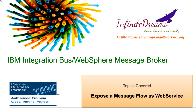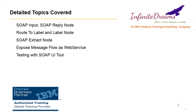Hello friends, in this IBM Integration Bus tutorial we will learn about web services. We will see how to expose a message flow as a web service to a third party. While doing this we will learn about SOAP input node, SOAP reply node, how to configure these nodes, how to use route to label and label node, and what is the application of SOAP extract node. We will develop a message flow and expose it as a web service, and while testing this service we will use the SOAP UI tool.